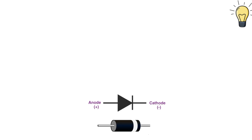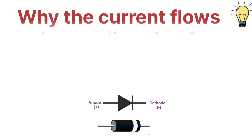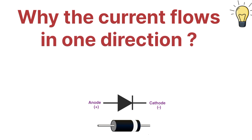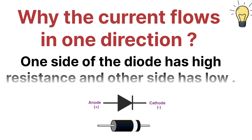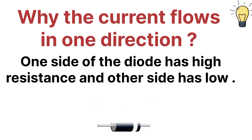The next question that may come to your mind is why does the current flow inside a diode in one direction. The reason is that in a diode, one side has low resistance and the other side has high resistance, so the current flows from high resistance to low resistance in one direction. This is the reason behind the direction of current in a diode.